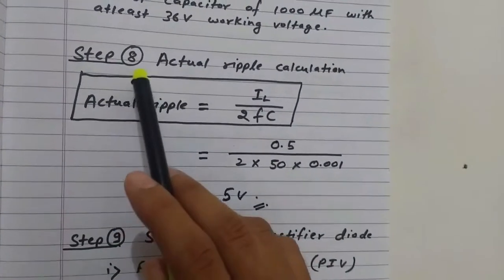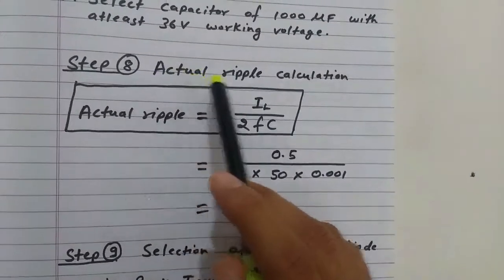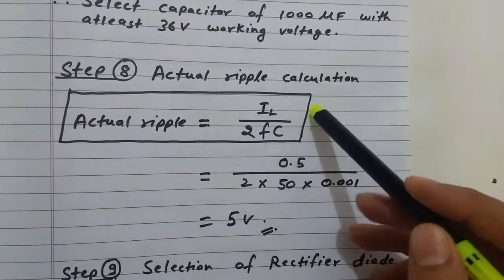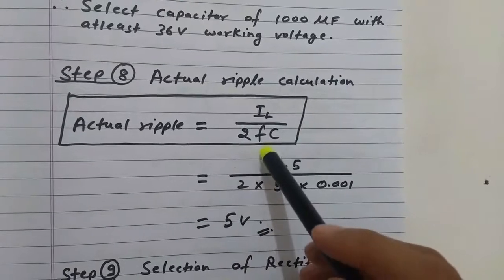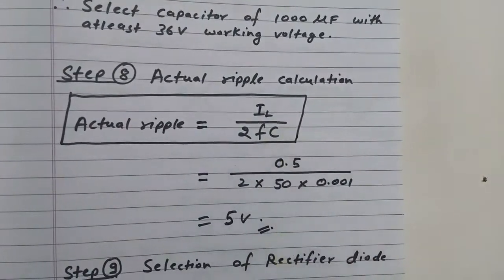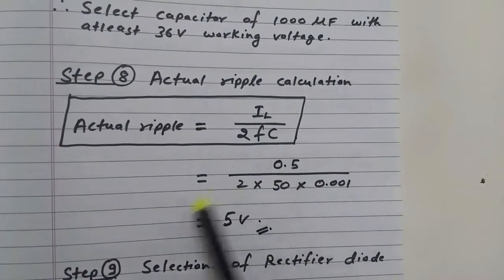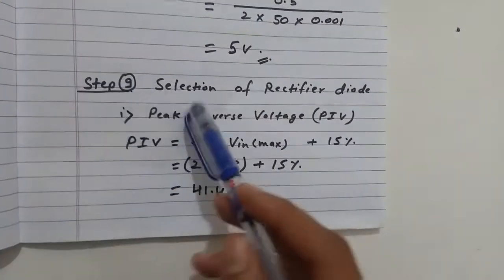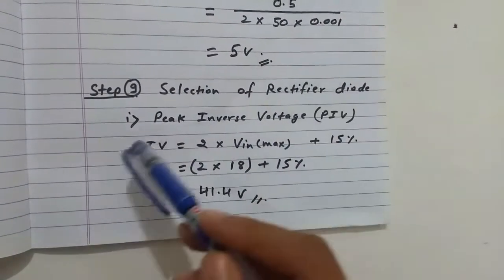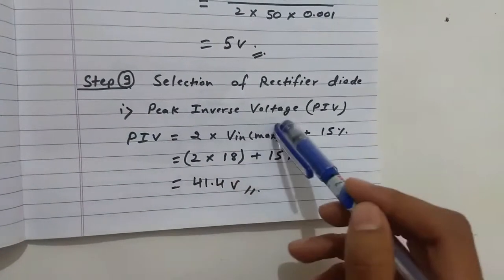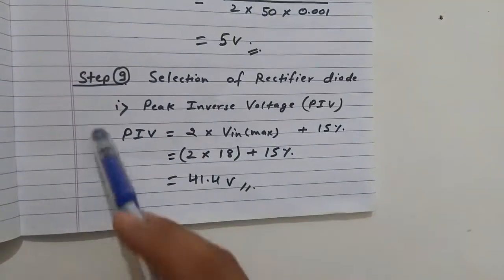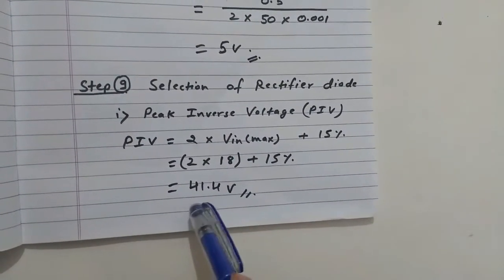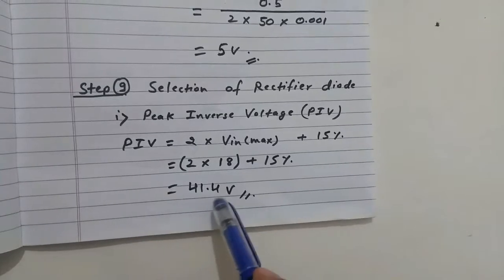The next step is actual ripple calculation: V_ripple = I_load / (2 × f × C) = 5 V. For rectifier diode selection, the first parameter is peak inverse voltage (PIV), calculated using the standard formula: PIV = 41.4 V.